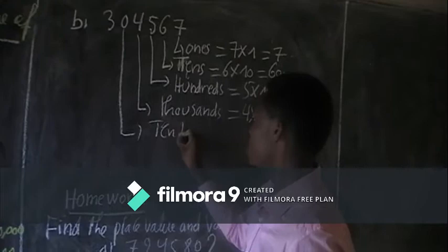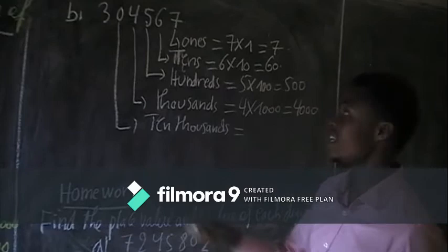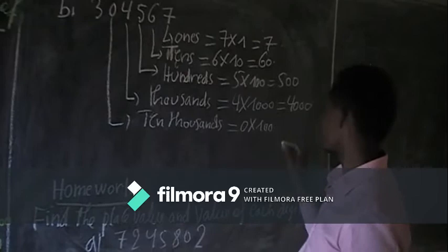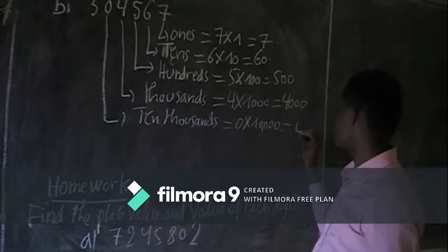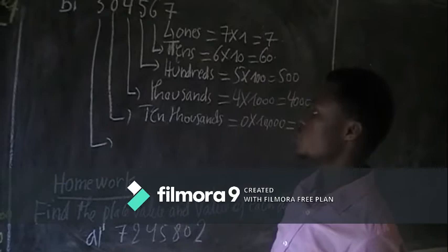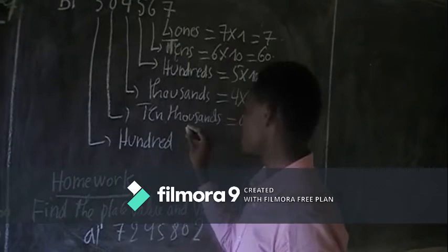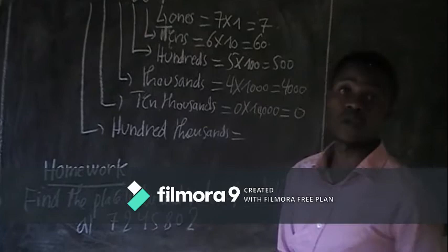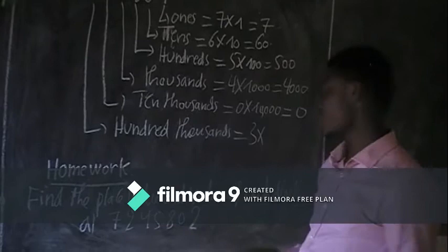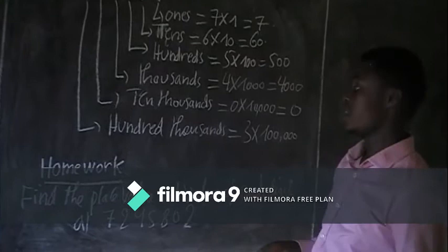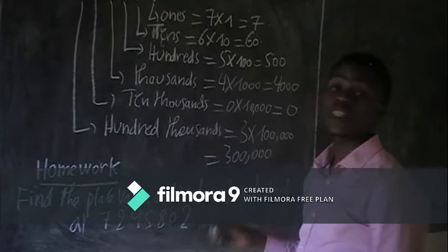Next, this belongs to the ten-thousands place. The value: take zero times ten thousand. Zero times this number gives us zero. Then the last one, this belongs to the hundred-thousands place. That gives us three hundred thousand.